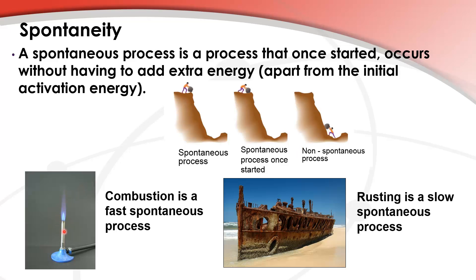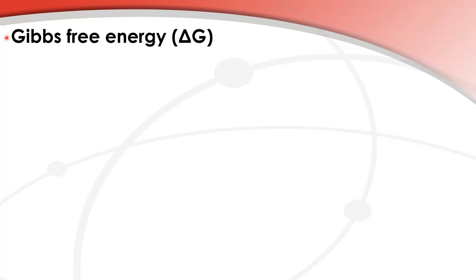Here we have some examples of spontaneous chemical reactions. In the left picture we have gas burning in a Bunsen burner — that's combustion, which is a fast spontaneous process. On the right we have rusting, which is a slow spontaneous process. So even though combustion is fast and rusting is very slow, they are both spontaneous processes. Once you put in the energy to get them started, they'll continue without having to add any extra energy.